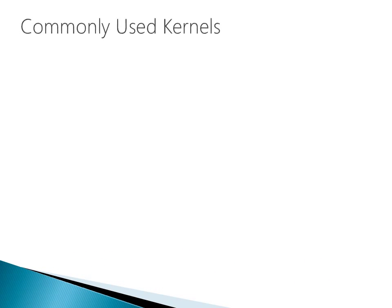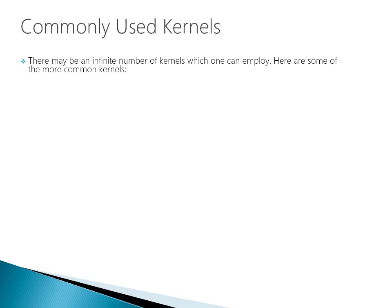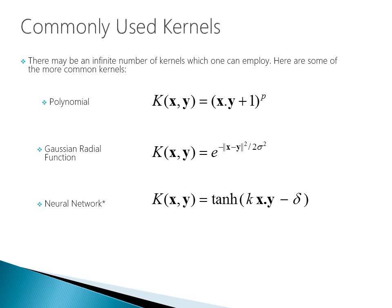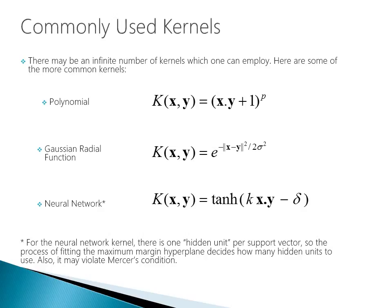What the kernel trick achieves is that all computations needed to find the maximum margin separator can be expressed in terms of scalar products between pairs of data points in the higher-dimensional feature space. These scalar products are the only part of the computation that depends on the dimensionality of the higher-dimensional space. The kernel trick is essentially a magic way of doing scalar products much faster than is usually possible, by choosing a mapping that allows fast scalar products. There may be an infinite number of kernels one can employ. Common kernels include polynomial, Gaussian radial functions, and neural networks. For the neural network kernel, there's one hidden unit per support vector, and the process of fitting the maximum margin hyperplane decides how many hidden units to use.